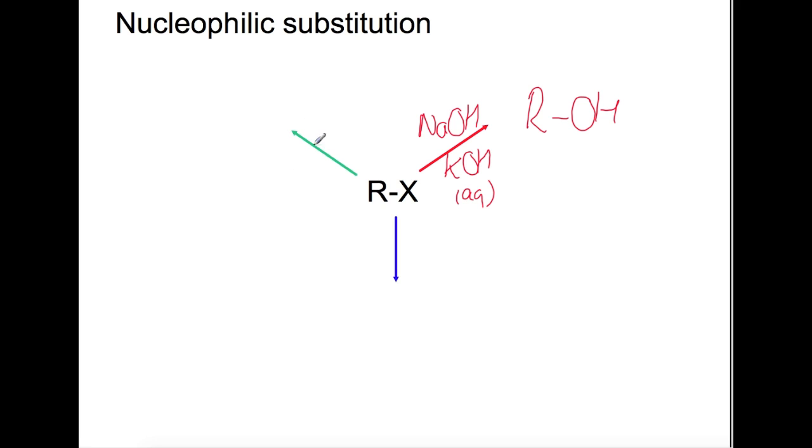If you wish to produce a nitrile or to take it further towards a carboxylic acid, then you should use sodium cyanide in ethanol. The CN here is your nucleophile and you will replace the X with a C triple bond N. This is an excellent way to increase the length of the chain by one. If you wish you can then use acid hydrolysis to turn this into a carboxylic acid.